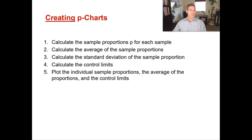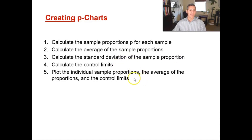To create a P chart, first calculate the sample proportions for each sample. Next, calculate the average of the sample proportions. Then calculate the standard deviation of the sample proportion. After that, calculate the control limits. Finally, plot the individual sample proportions along with the average of the proportions and the control limits.